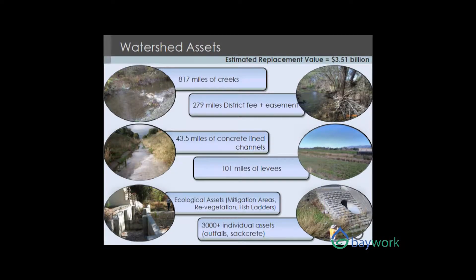In our watershed program, there's 817 miles of creek in the county. Of that amount we own and manage 279 miles. Within that there's 43 and a half miles of concrete-lined channel, 101 miles of levees, and we also have ecological assets.